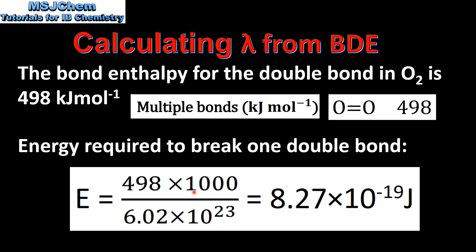Then you divide that by Avogadro's constant which is 6.02 times 10 to the 23. That gives us a value of 8.27 times 10 to the negative 19 joules.